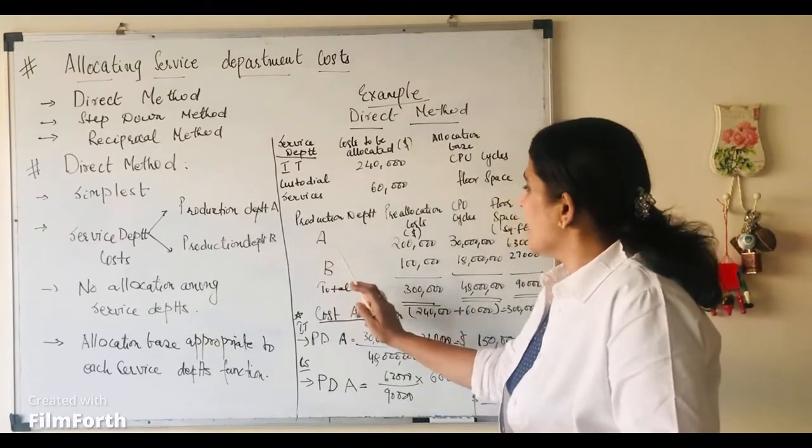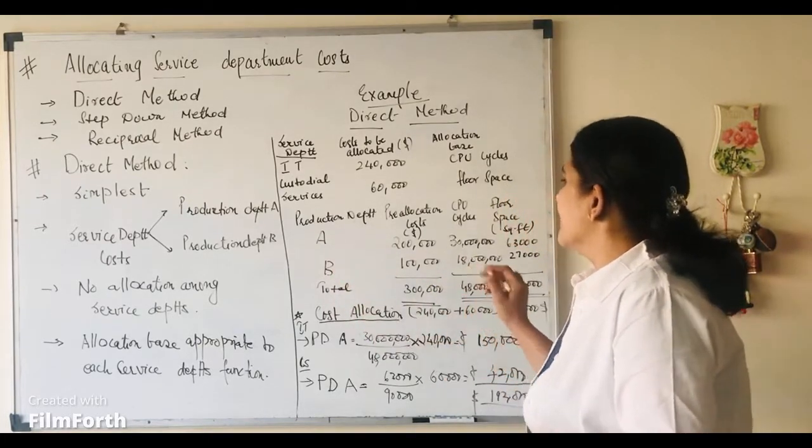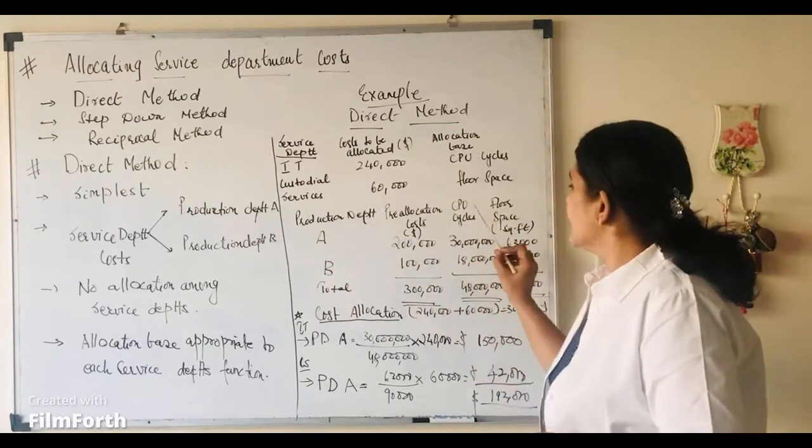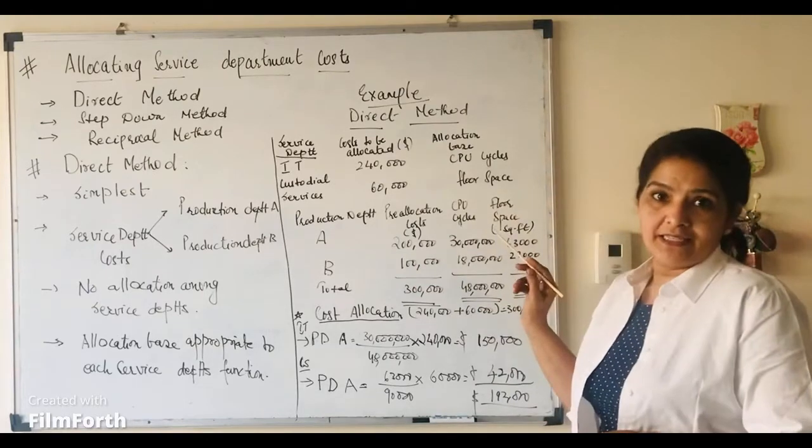Now, as far as production department A and B are concerned, they have their own costs which are the pre-allocation costs. And then you have the CPU cycles and the floor space.